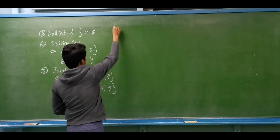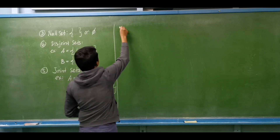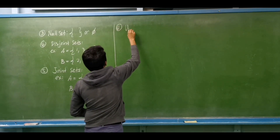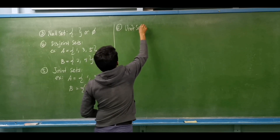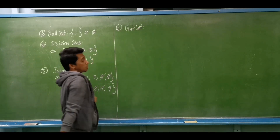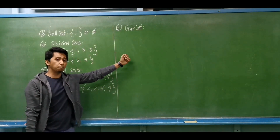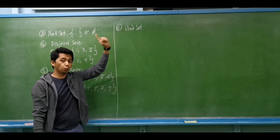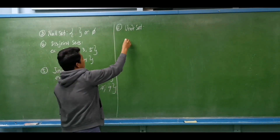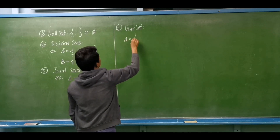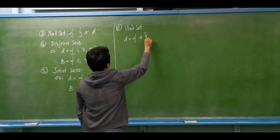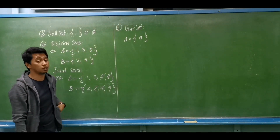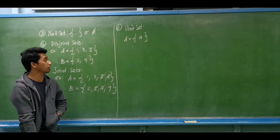After joint sets, we have the unit set — number six. For a unit set, from the name itself, 'unit,' it is a type of set composed of one element. For example, set A with the element of small letter A. That is an example of a unit set — a set that contains one element.